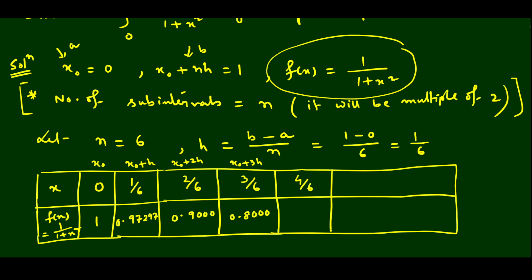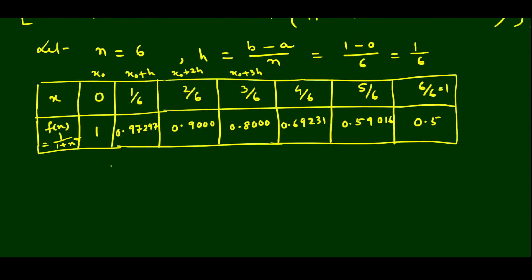Continuing: x = 4/6 gives f ≈ 0.69231. Then x = 5/6 gives f ≈ 0.59016. Finally x = 6/6 = 1, which matches our upper limit, gives f = 1/(1+1) = 1/2 = 0.5. So writing the y-values: y₀ = 1, y₁ = 0.97297, y₂ = 0.900, y₃ = 0.800, y₄ = 0.69231, y₅ = 0.59016, y₆ = 0.5. We have 6 sub-intervals since n = 6.